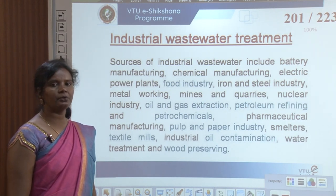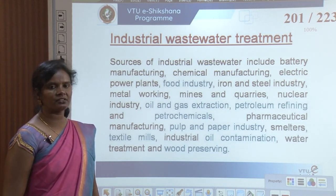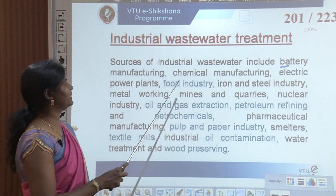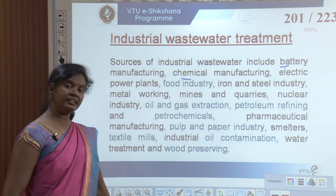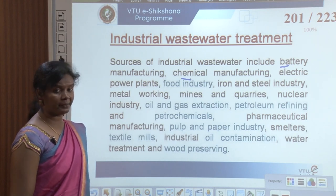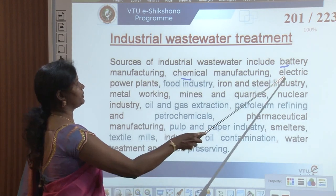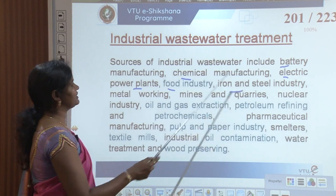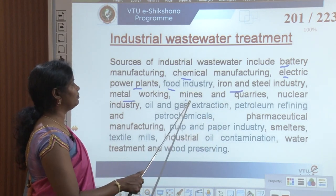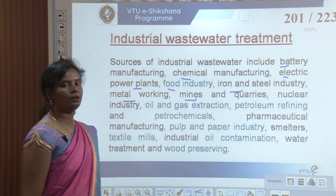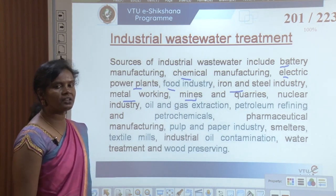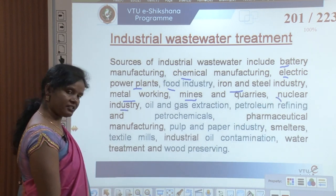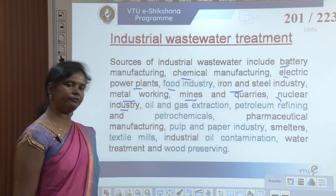Sources of industrial wastewater include battery manufacturing, chemical manufacturing, electrical power plants, food industry, iron and steel industry, metal working, and mines and quarries — where a lot of water is used and waste is generated.